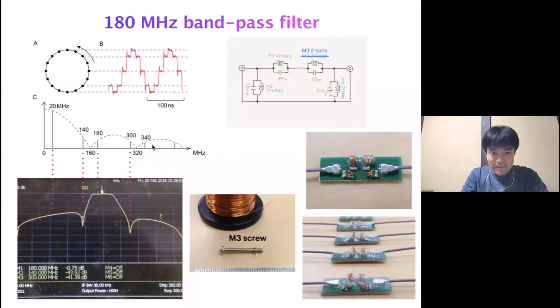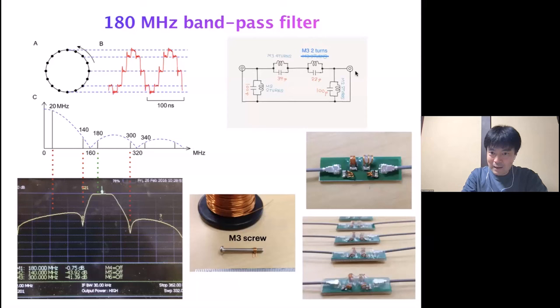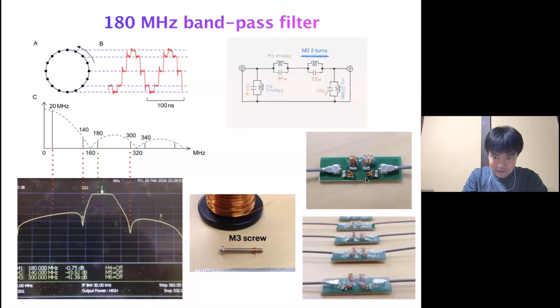As mentioned, we have several Fourier components, and for our purposes we are interested in the 180 MHz component alone. So we want to discard all other Fourier components. That's why we designed a bandpass filter with stop-rejection bands exactly at 140 and 300 MHz. After some trial and error, we found that the handmade filter works quite nicely, passing 180 MHz alone and rejecting others.